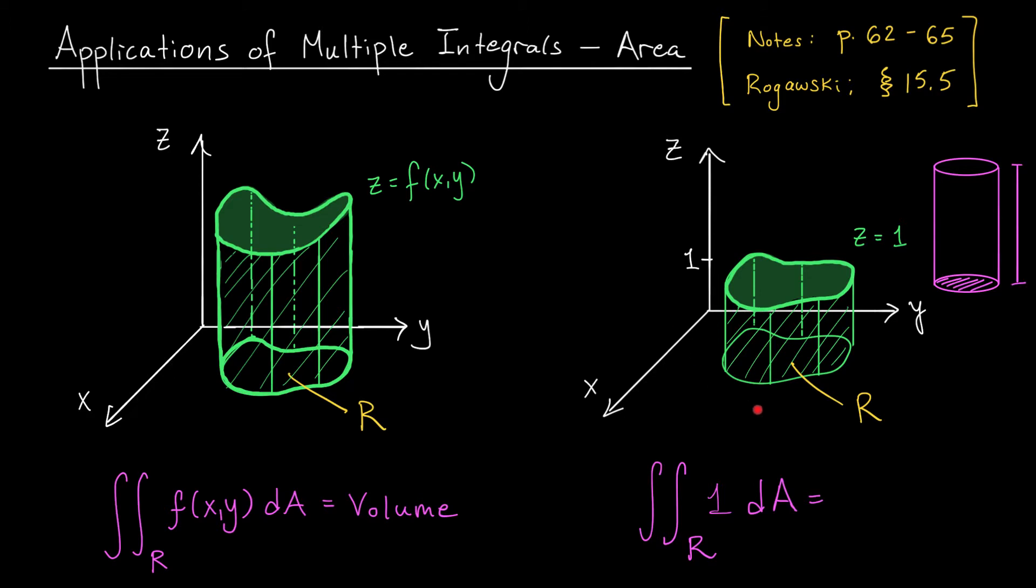Well, the same is going to be true here. Here I have a solid whose bottom face is given by this region r, and whose top face is also given by this region r. It's just shifted up by one unit. So if I think of this like a cylinder, I can compute its volume, which, by the way, is this double integral of 1 dA, as the area of the base, the area of r, times the height, which is 1. So this double integral of 1 is really computing the area of r.